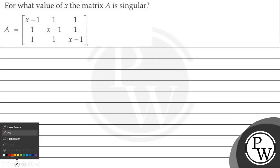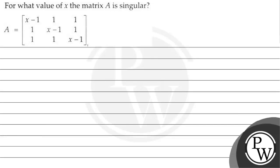Hello, let us read the question. The question says: for what value of x is the matrix A singular? A is equal to: x minus 1, 1, 1; 1, x minus 1, 1; 1, 1, x minus 1.